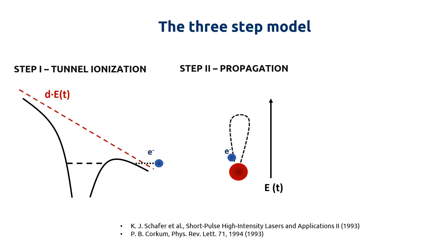Finally, in the last step, the electron can recombine with the parent ion, releasing all the accumulated kinetic energy, with the emission of an XUV photon. The HHG process can also be explained in the framework of quantum mechanics.